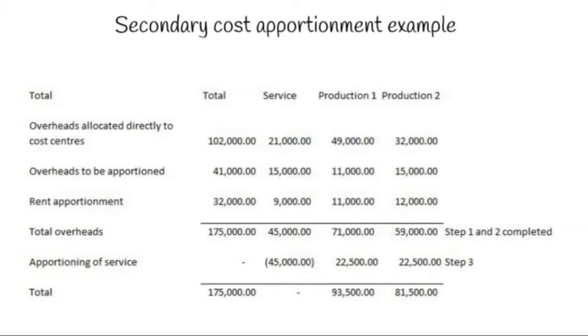After working out steps one and two we have total overheads of £175,000 however we need to split out this service cost centre. Since we've only got two production centres we'll divide by two. The £45,000 gets taken out and £22,500 goes to each production cost centre. Production one then has £93,500 and production two has £81,500, overall totaling £175,000.